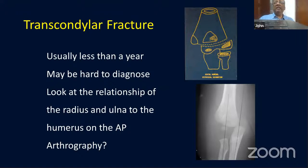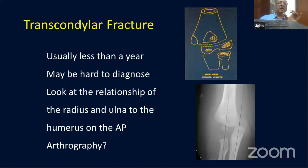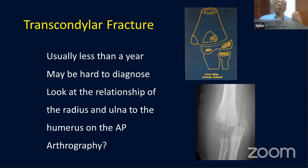If these transcondylar fractures present late, they heal very quickly — within a week or 10 days — making reduction more difficult. In very small children there is some remodeling potential. The general consensus is not to interfere after about seven days; allow mobilization and correct any deformity later. Be aware this injury can be mistaken for a dislocation or missed altogether.